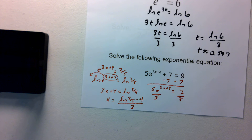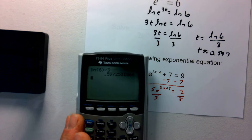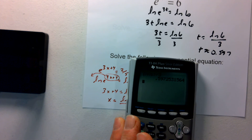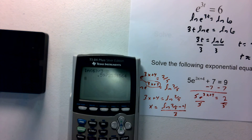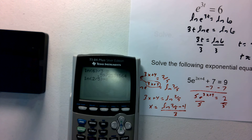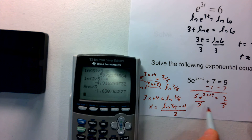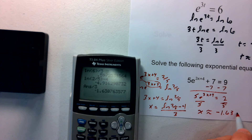We can get an approximation by putting that into the calculator. So I have the natural log of 2 fifths — that's 2 divided by 5 — close parentheses, subtract 4, hit enter, then divide by 3. That gives an approximation: x is approximately negative 1.639, rounded to three decimal places.